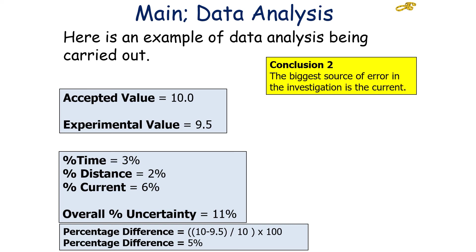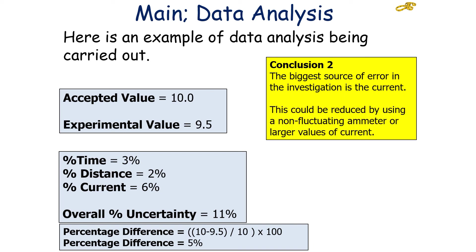The second conclusion is that the biggest source of error in the investigation is the current, because it has the highest percentage uncertainty. We could reduce this percentage uncertainty by either using a non-fluctuating ammeter or larger values of current.